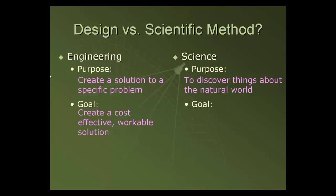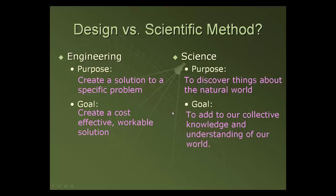Whereas in science, our goal is really just to add to collective knowledge and our understanding of the world and how things work. Engineering and science go hand in hand, because without discovering things about our natural world and knowing how things work, it makes it much more difficult to create an actual solution to a problem. So these two things go hand in hand, even though they are a little bit different.